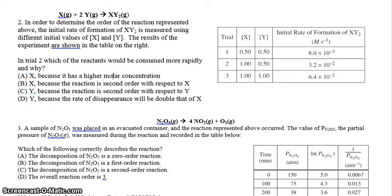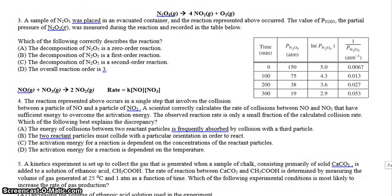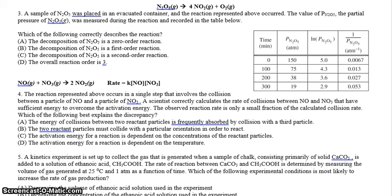Take a look at number three. We have a sample of N2O5 placed in an evacuated container. These are all gases. And the reaction represented above occurs. The value of the pressure of N2O5, which is our reactant, is measured during the reaction. You'll notice that as time goes on, we've measured the pressure change in our initial reactant. They've also calculated the natural log and the inverse. So this is very similar to question one. And they're asking us which of the following describes the reaction. The first one says the decomposition of N2O5 is zero order. We have first order, second order, and the overall reaction is third order.